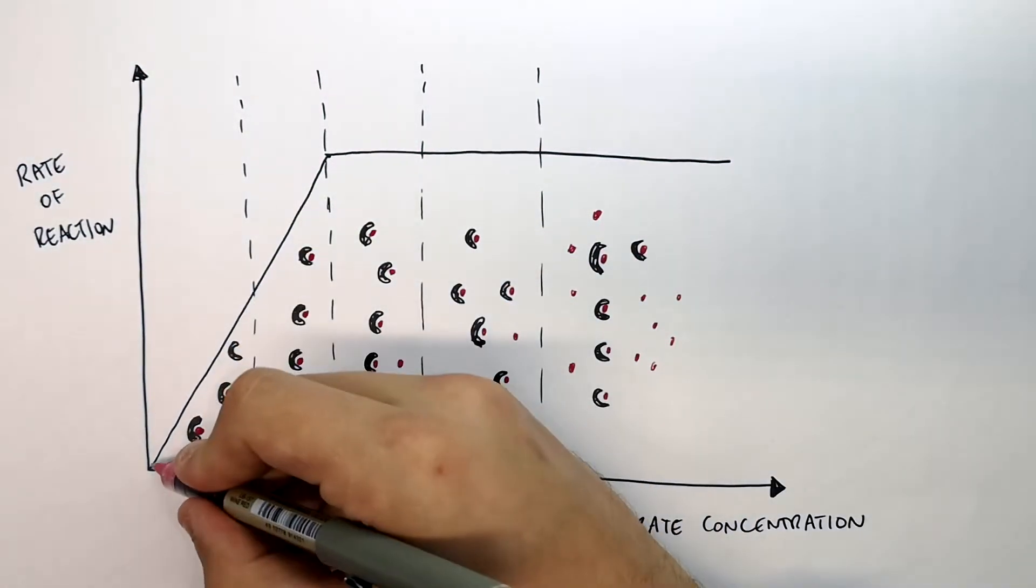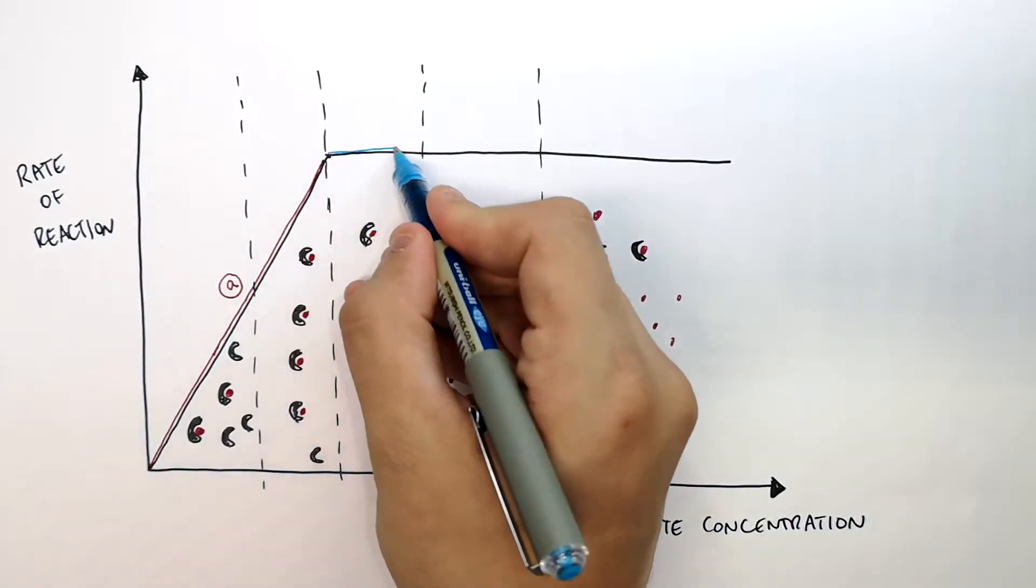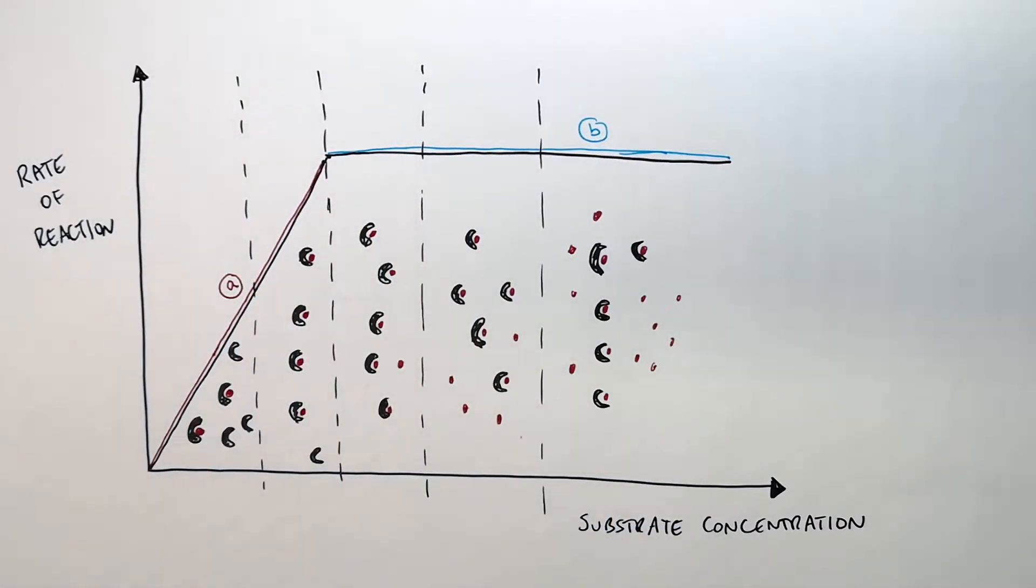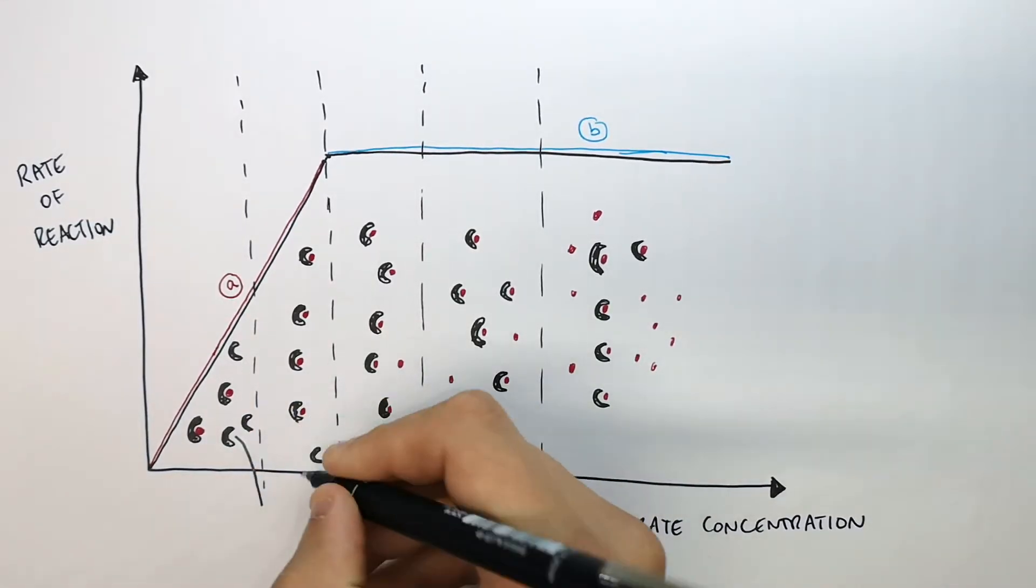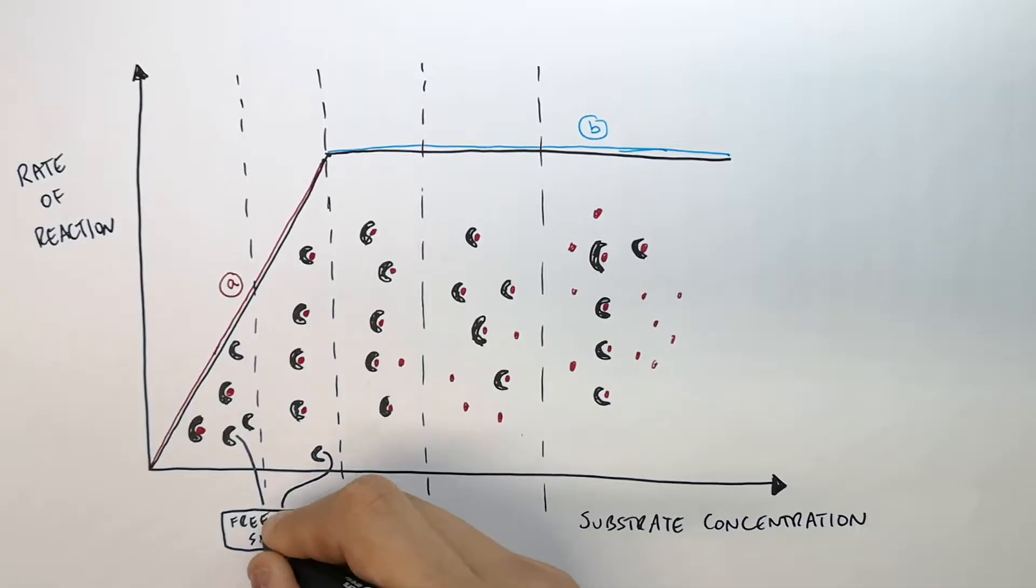So let's explain what's happening at A, and then let's explain what is happening at B. At low substrate concentration, under line A, there are free active sites. When I say free active sites, that means the active sites are empty. There is space to be filled in the enzymes.